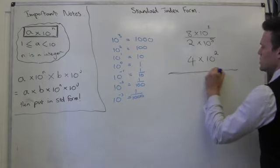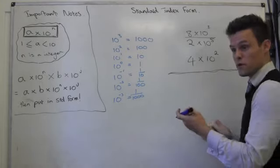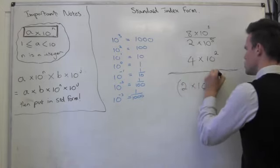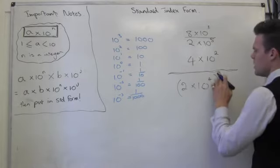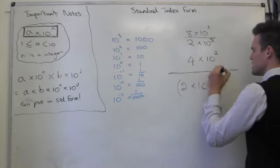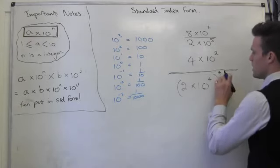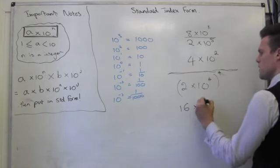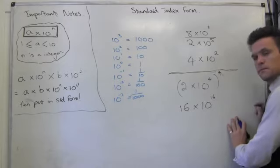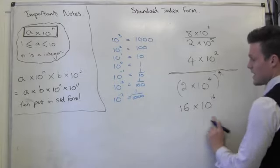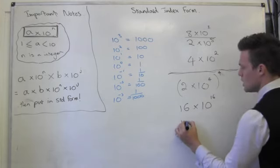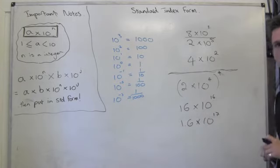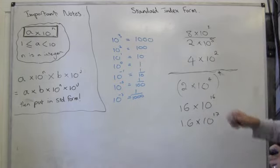If you've got a question where you have an index raised to a power — let's say 2 times 10 to the 4, raised to the power of 4 — then 2 to the power of 4 is 16, and for the power of 10 part, I multiply the indices: 4 times 4 is 16, so this is 16 times 10 to the 16. Again I double-check: is it in standard form? In this case it's not, so this is going to have to be 1.6 times 10 to the 17.